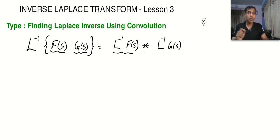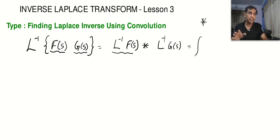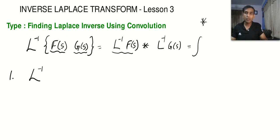I'll explain more about convolution when we work out the problems. In Laplace inverse, convolution is nothing but integration — one particular type of integration. So let's go for the first question. Find the Laplace inverse of 1 divided by s-squared multiplied by (s plus 1).